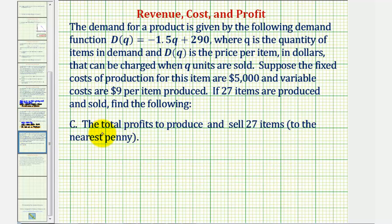And now for part C, we're asked to find the total profits to produce and sell 27 items. Well, the total profits, P of Q, would be equal to the total revenue, R of Q, minus the total cost, C of Q.